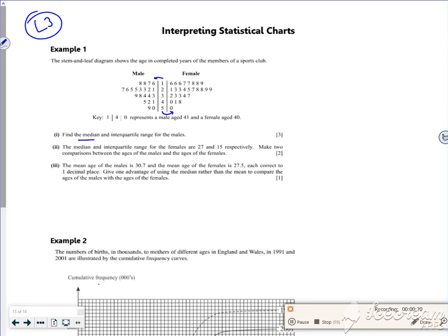Right, so what's the median for the males? If you look, there are 22 numbers, if I count them, 1, 2, 3, 4 on the top line and keep on going, I get n is 22. So the median is n plus 1 over 2, which is 23 over 2, which is 11.5, so I'm halfway between the 11th and the 12th.